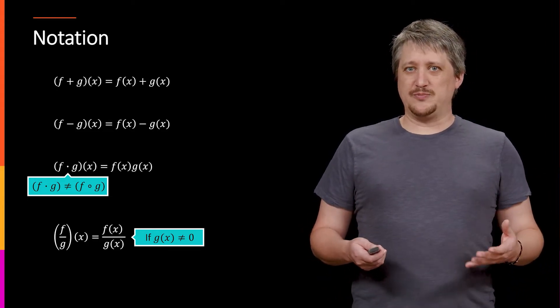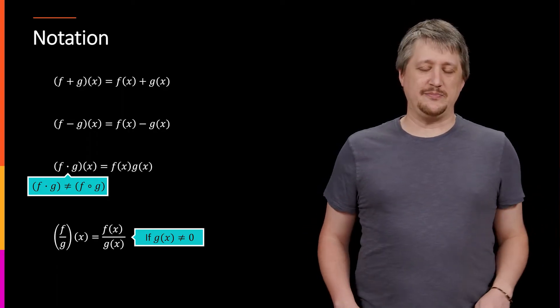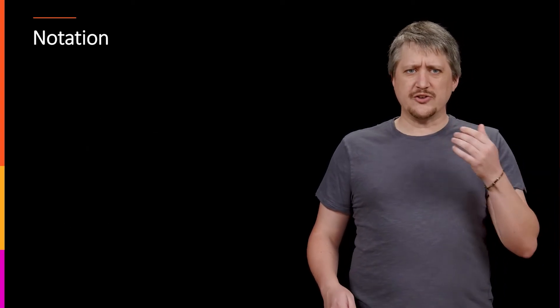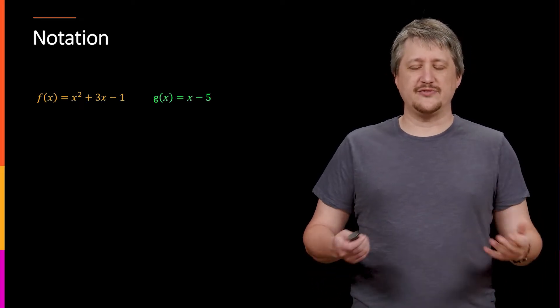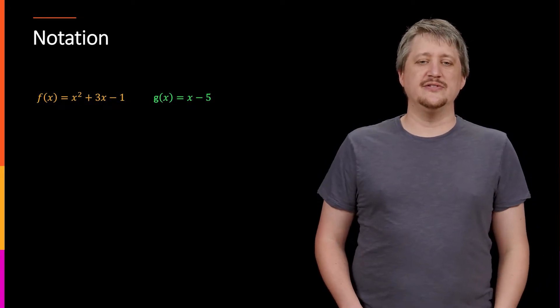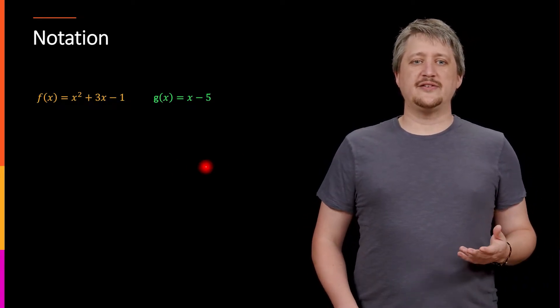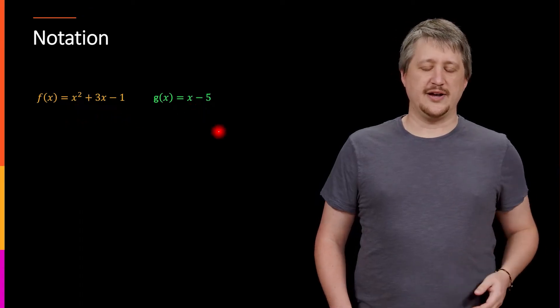So all of this is alphabet soup. Let's look at some actual examples and see how these things compute out. So let's say we have functions f(x) and g(x). And again, these functions are just arbitrarily chosen. There's nothing special about these functions. So we have f(x) here, this x² + 3x - 1, and g(x) is this x - 5.